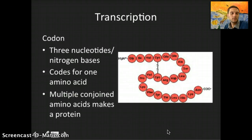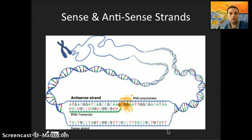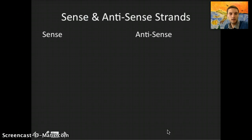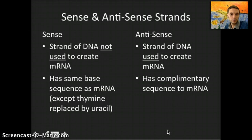Before transcription can begin, we need to identify the difference between the sense strand and the antisense strand. DNA contains two strands — a double helix. One is the sense strand and the other is the antisense strand. In transcription, only the antisense strand is used to make messenger RNA. The sense strand has the exact same base sequence as messenger RNA — except thymine is replaced by uracil — whereas the antisense strand has a complementary sequence to messenger RNA, because that mRNA is made from the antisense strand.